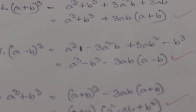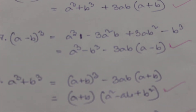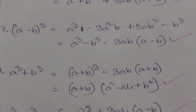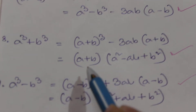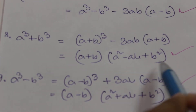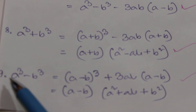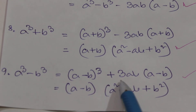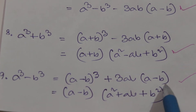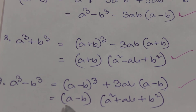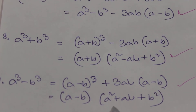The next one is a cube plus b cube, that is equal to (a + b) whole cube minus 3ab into (a + b). We can also write it as (a + b) into (a square minus ab plus b square). The next one is a cube minus b cube, that is equal to (a - b) whole cube plus 3ab into (a - b), and also equal to (a - b) into (a square plus ab plus b square).